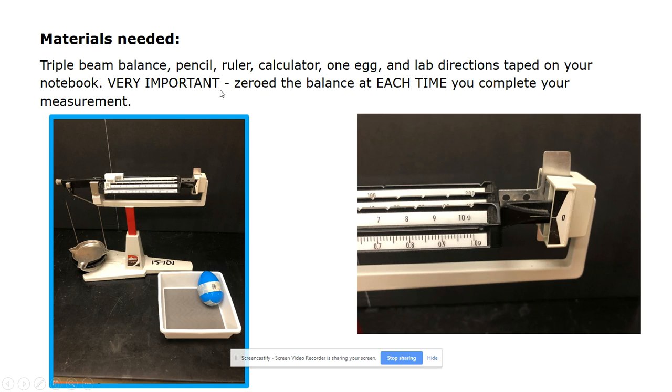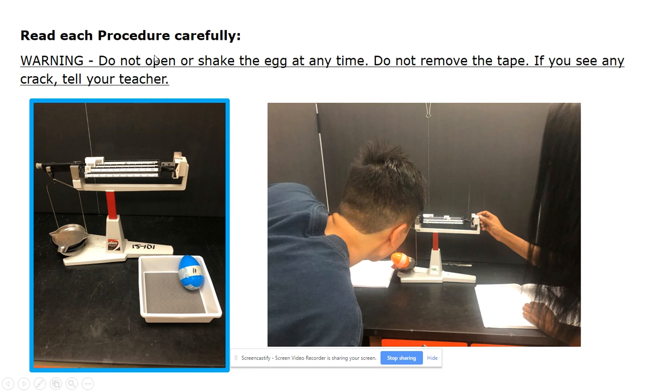It is very important that the scale is zeroed each time you complete your measurement. Do not open or shake the egg at any time. Do not remove the tape. If you see any cracks in the egg, please tell your teacher. It is also important to record the mass number at eye level to avoid parallax error.